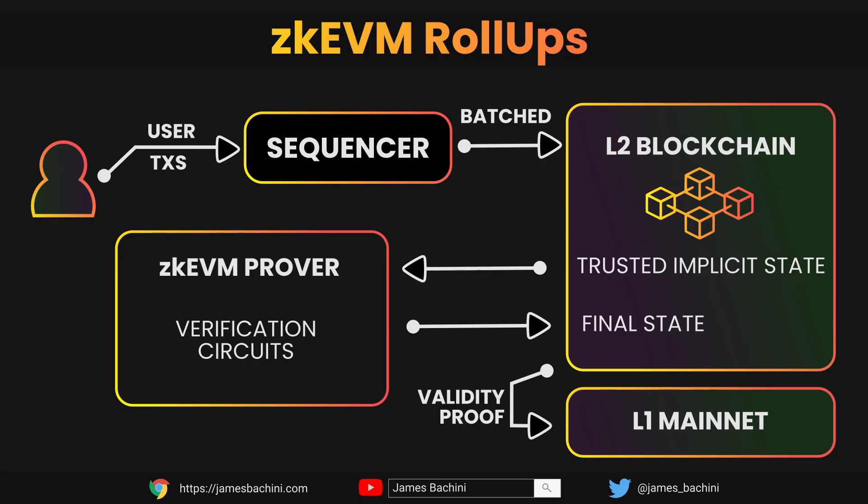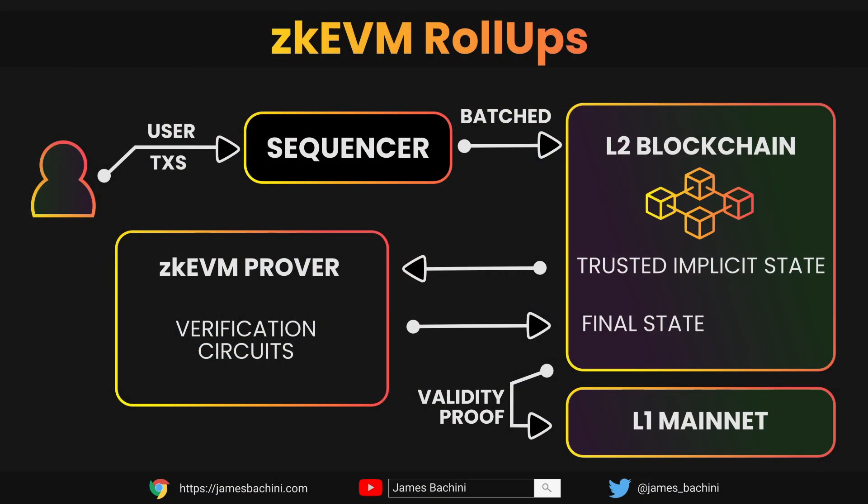When a user sends a transaction to a ZK rollup it goes to a sequencer which batches all the transactions together and then sends it to the layer 2 blockchain. The blockchain network then computes the trusted implicit state, which is the state changes of those transactions. So if Alice sends Bob a certain amount of funds then it changes the balances — that is the state change. The state is what's stored as perpetual storage on the blockchain network.